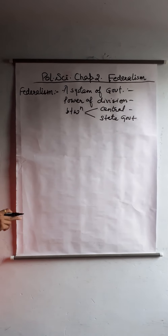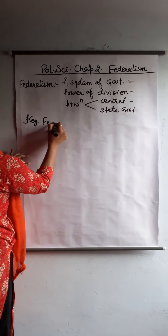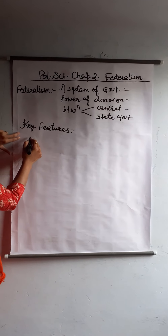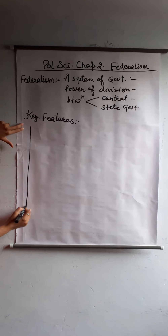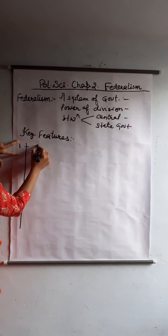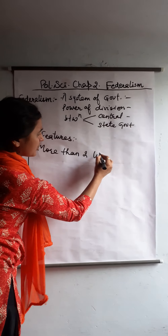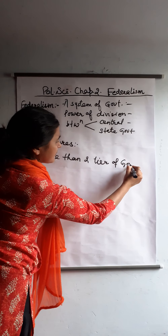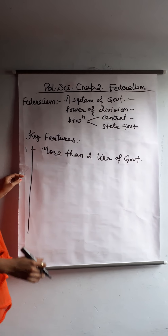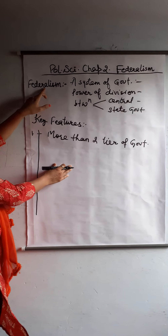This is the system of Federalism. Second, what is the key feature of Federalism? How can you know which government is federal? The key feature of Federalism is more than two tiers of government. In India there is a central government and state governments, and this is added in the Constitution. So, how can you know that it is a federal country?